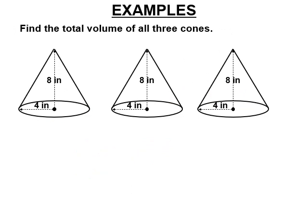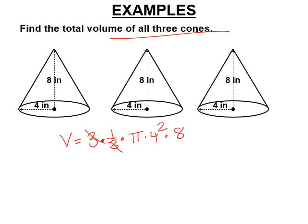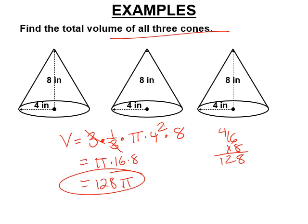Let's find the volume leaving pi in the answer. Volume equals one third times pi times r squared times h. With radius 4 and height 8: the 3s cancel, 4 squared is 16, so it's pi times 16 times 8. 16 times 8 is 128, so the volume is 128 pi cubic units — the same as a cylinder with the same circle on top and bottom, scaled by one third.